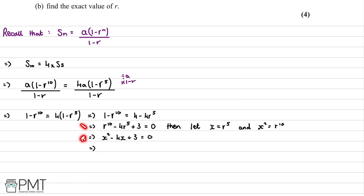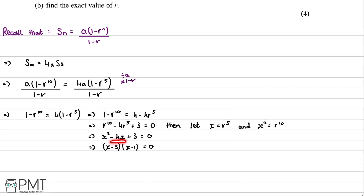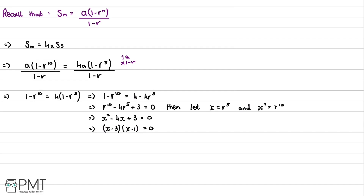We factorize to get x minus 3 times x minus 1 equals 0. We can verify this: x squared minus 3x minus x gives minus 4x, and negative 3 times negative 1 gives 3. So the factorization is correct. We now substitute r to the power of 5 back in for x.